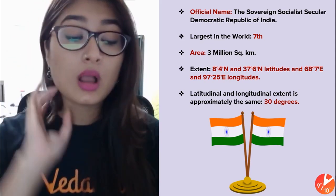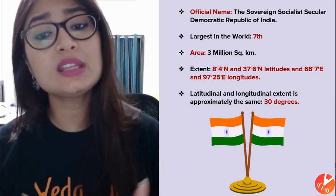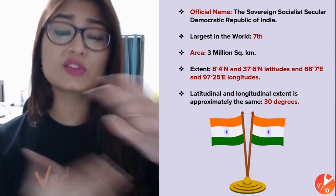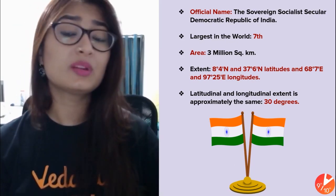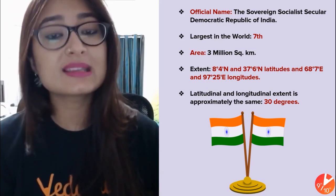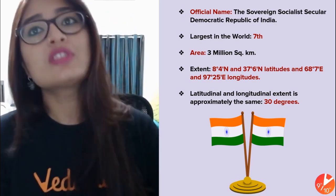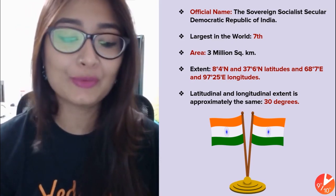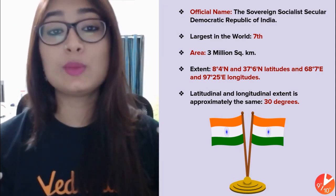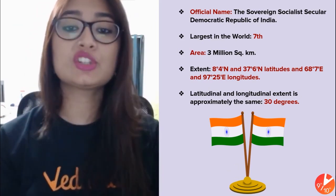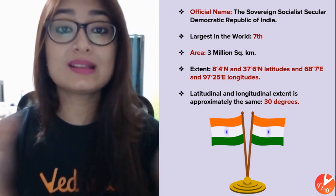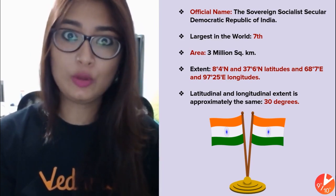Another very important and interesting fact is that India is actually the seventh largest country in the world in terms of area. India is also the second largest when it comes to population in the world — not something to feel proud of, but China is giving us a close race here. The area of our country is 3 million square kilometers — that's a lot!